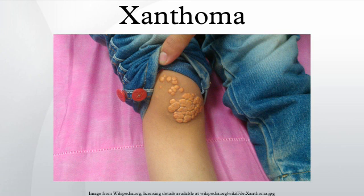Eruptive xanthoma – Eruptive xanthoma is clinically characterized by small, yellowish-orange to reddish-brown papules that appear all over the body. It tends to be associated with elevated triglycerides.